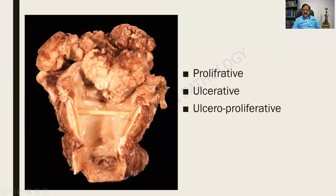This is a specimen of the larynx and it has been replaced by a large cauliflower-like growth — the same description applies: it is friable and grayish white in color. Grossly, squamous cell carcinoma can be of the following types: it can be proliferative, or ulcerative, or a combination of both — ulceroproliferative. These are the three types of gross presentations of squamous cell carcinoma.